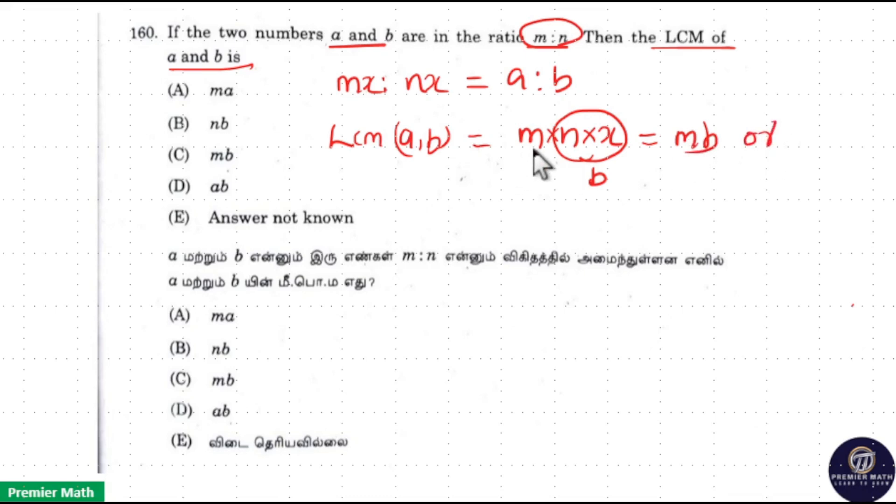Mb, or I can take M into X as A remaining is N. So Mb or AN must be the LCM of AB. If you look at this, option C is your answer. Mb is in option.